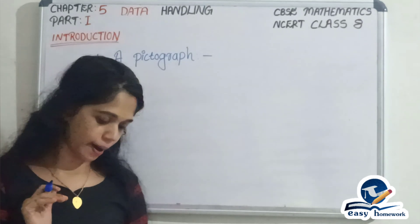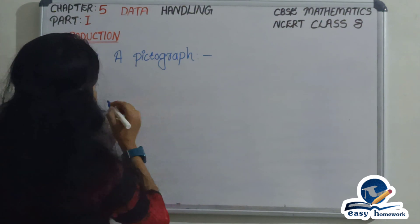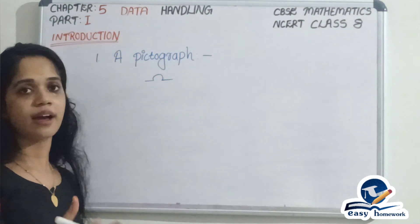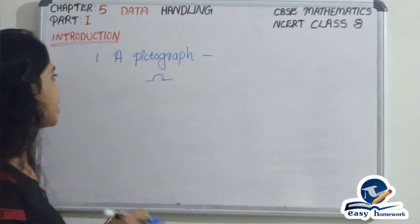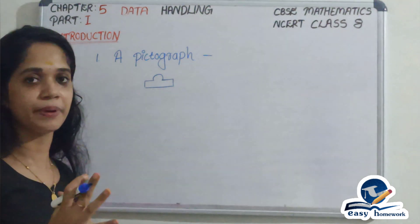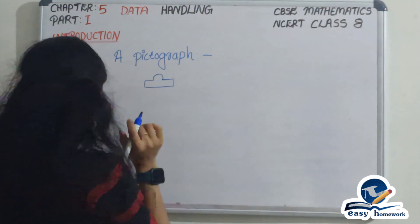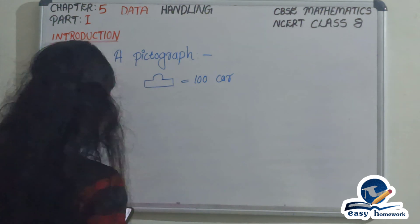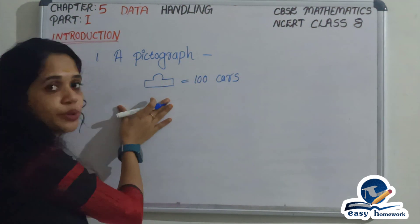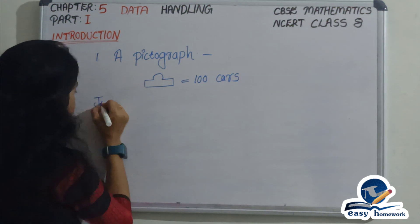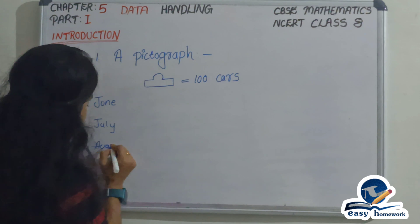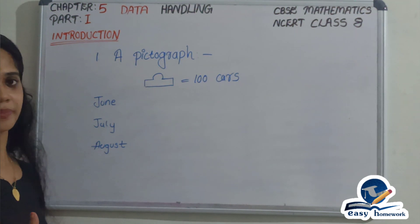Let's take an example. Here in this image, we have a pictograph. One symbol stands for 100 cars. We will look at car production for three months: June, July, and August.